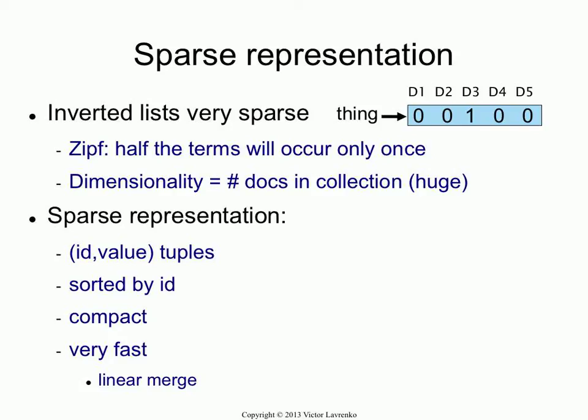Why are they sparse? Because most words don't occur in most documents. We have something called Zipf's Law, which says, among many other things, that half of our terms are only going to occur once.